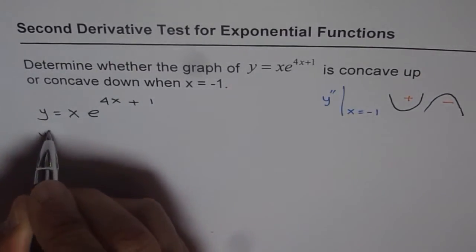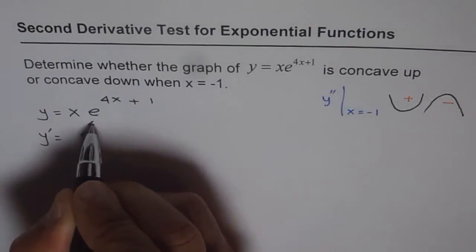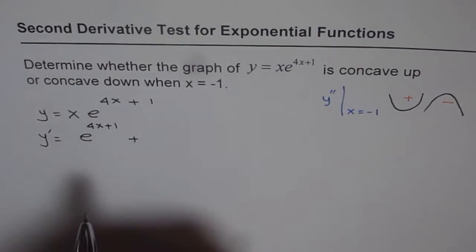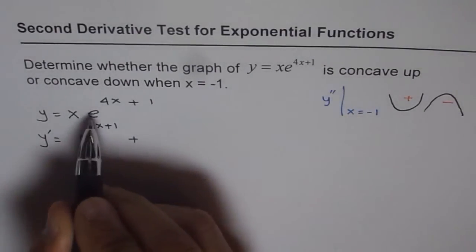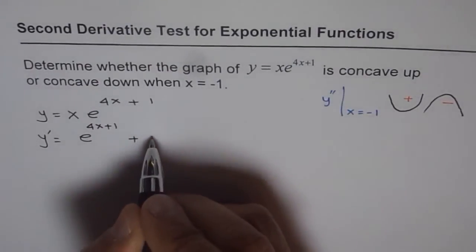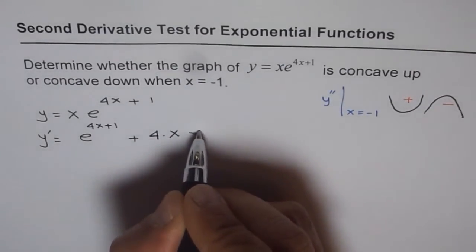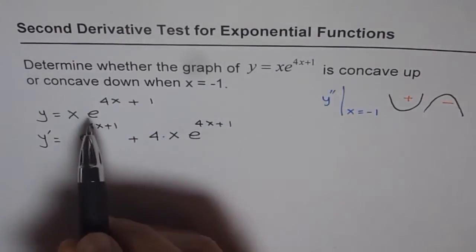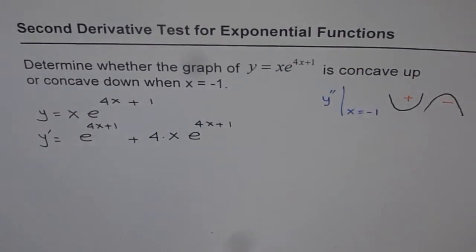Let's find the first derivative first. y dash — we use the product rule. The derivative of x is 1, so we get e to the power of 4x plus 1, plus x times the derivative of the exponential function. The exponential function derivative is the exponential function times the inner derivative, which is 4. So we get 4x times e to the power of 4x plus 1 as the second term. That is the first derivative.